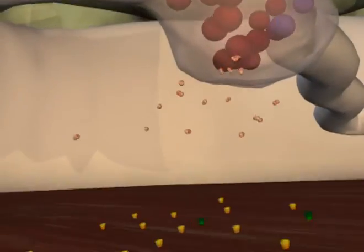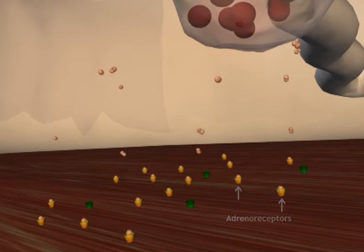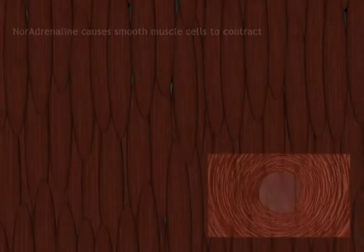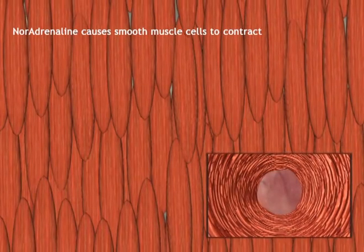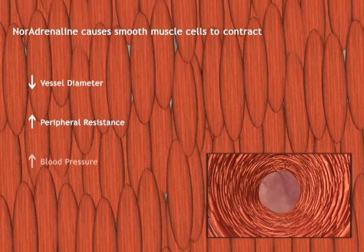Noradrenaline has affinity for post-junctional alpha and beta adrenoceptors. When a sufficient number of receptors are occupied, smooth muscle cells will contract, leading to a decrease in vessel diameter, an increase in total peripheral resistance, and a rise in blood pressure.